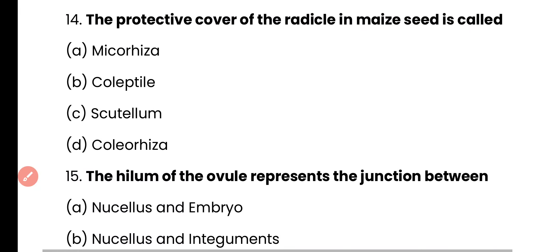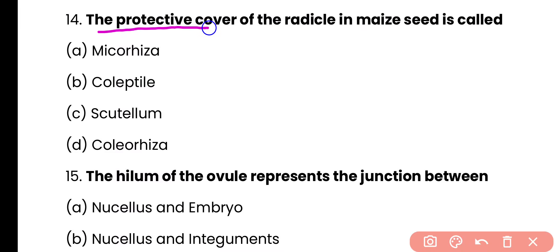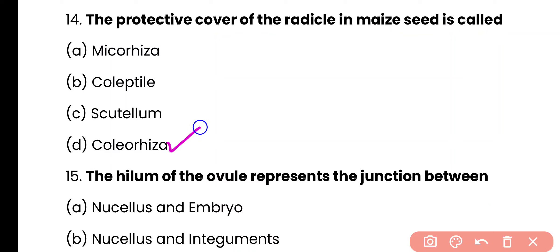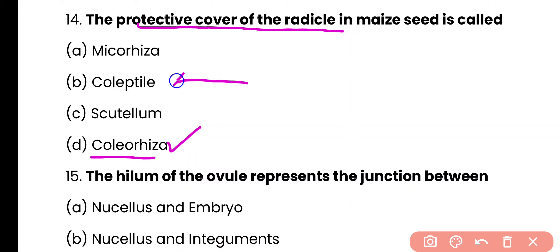Question number 14. The protective covering of the radicle in a monocot seed is called: mycorrhizae, coleoptile, scutellum, or coleorhizae? The correct answer is option D. The protective covering of the radicle is called coleorhizae, while the protective covering of the plumule is called coleoptile.